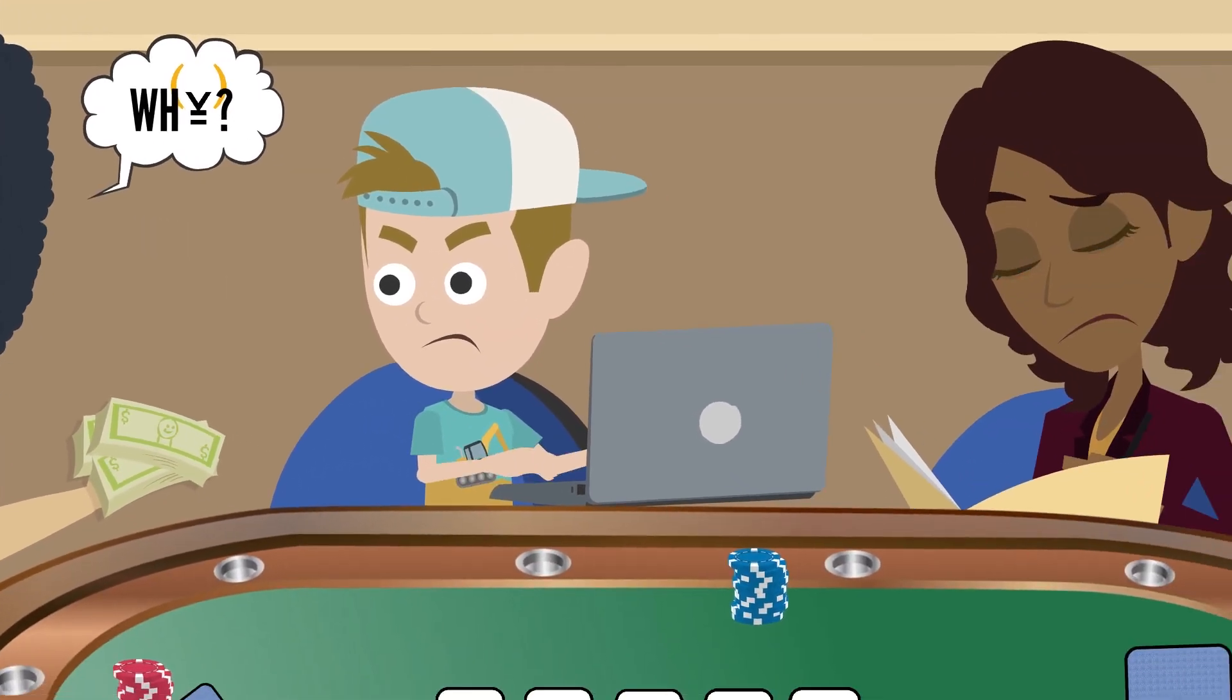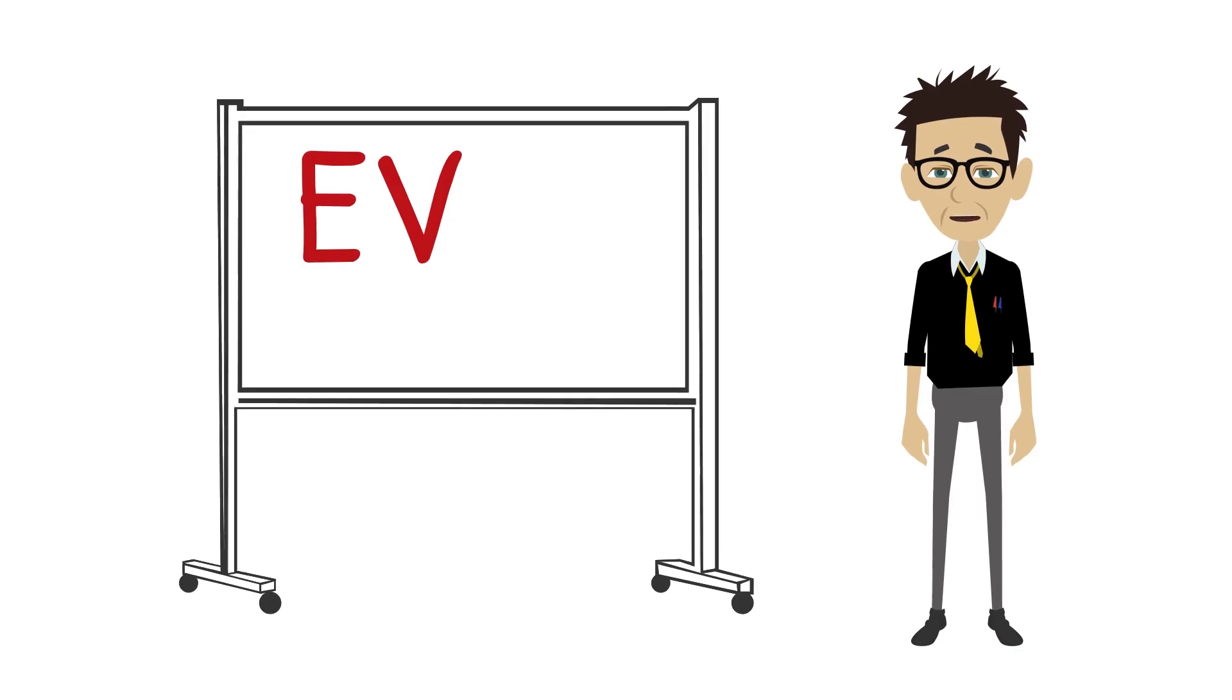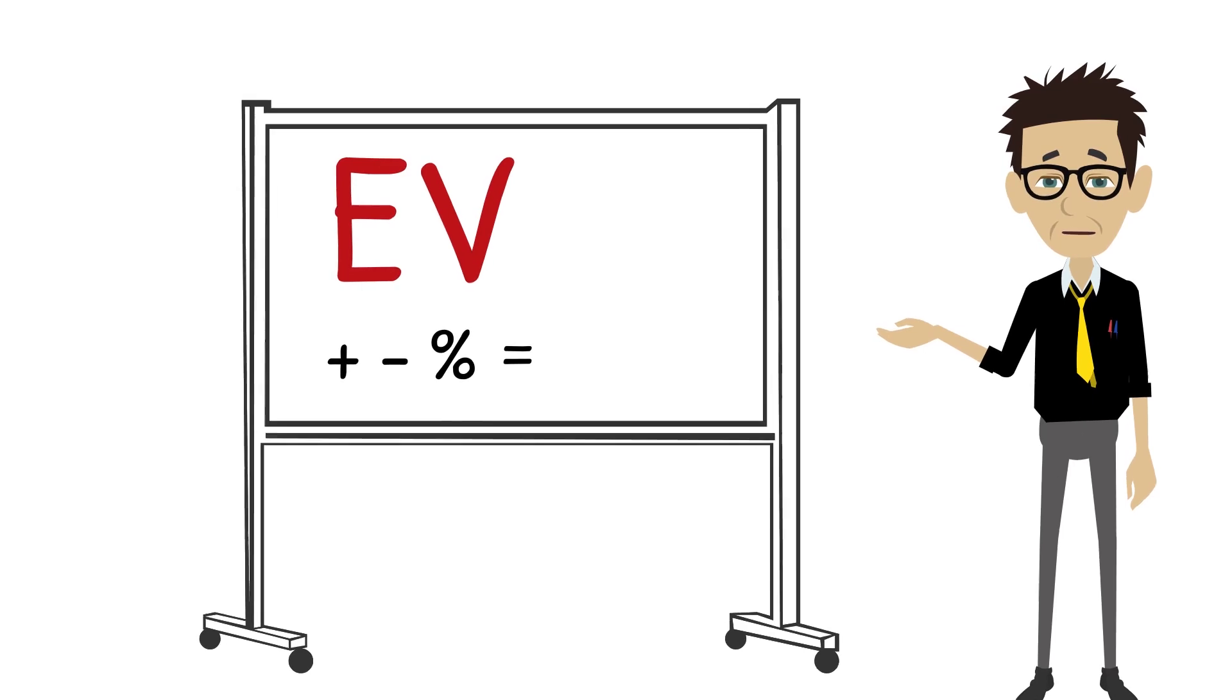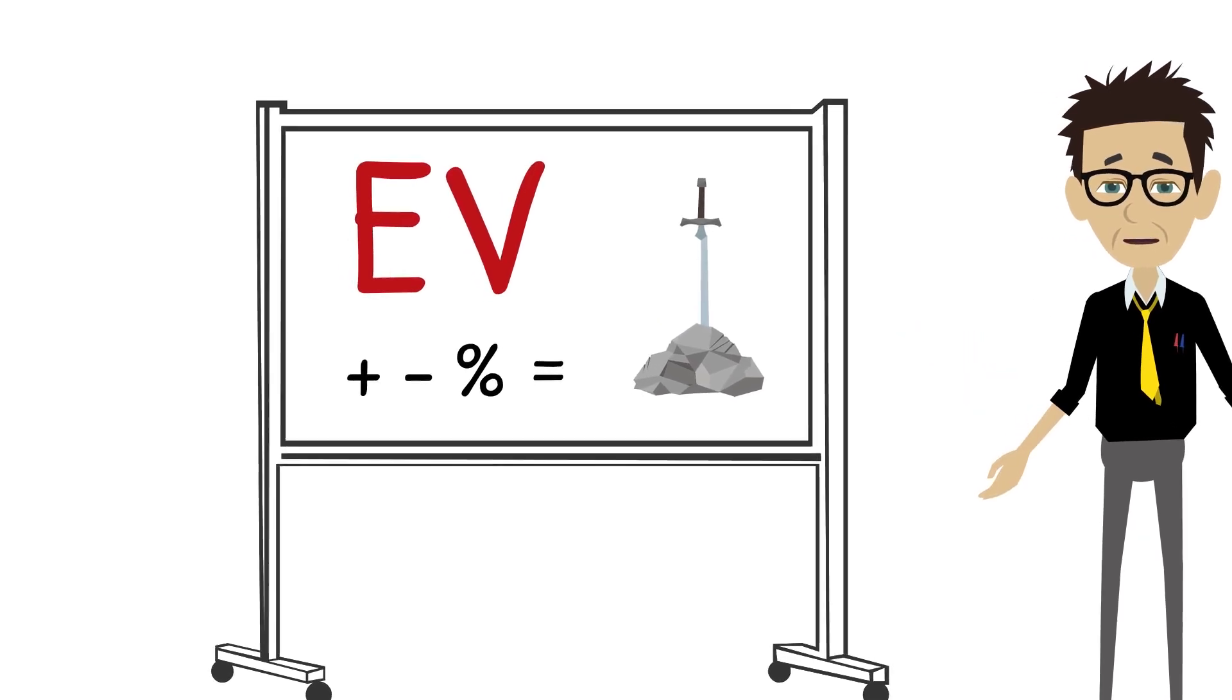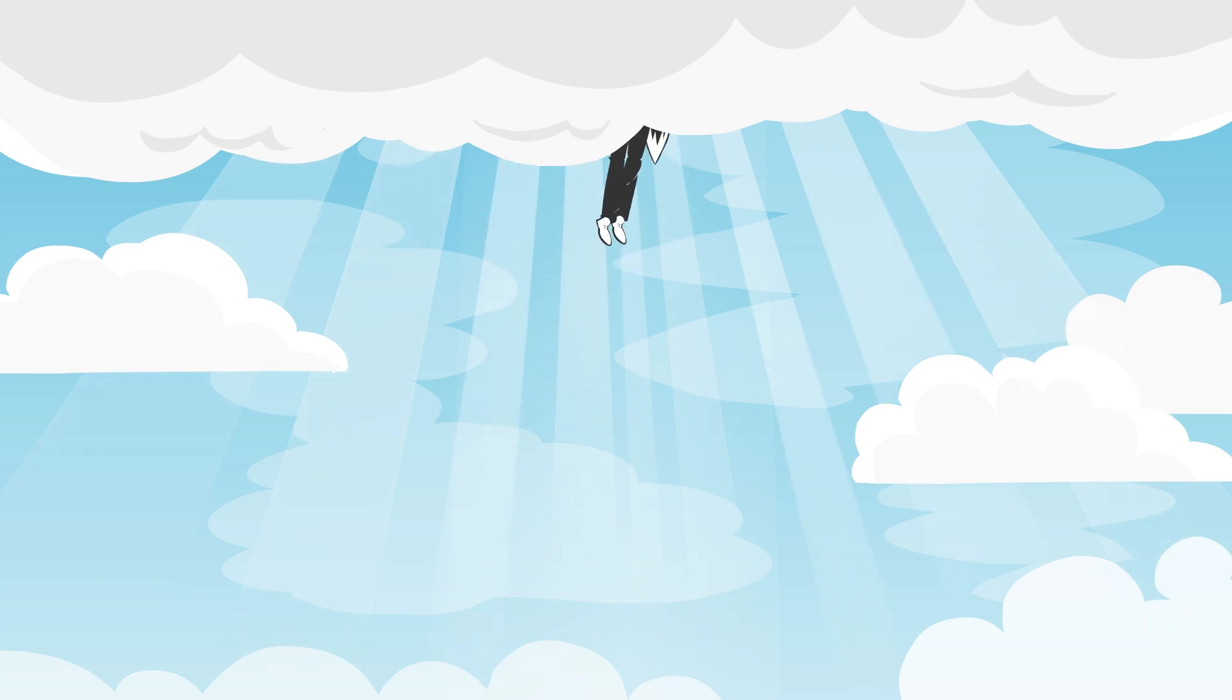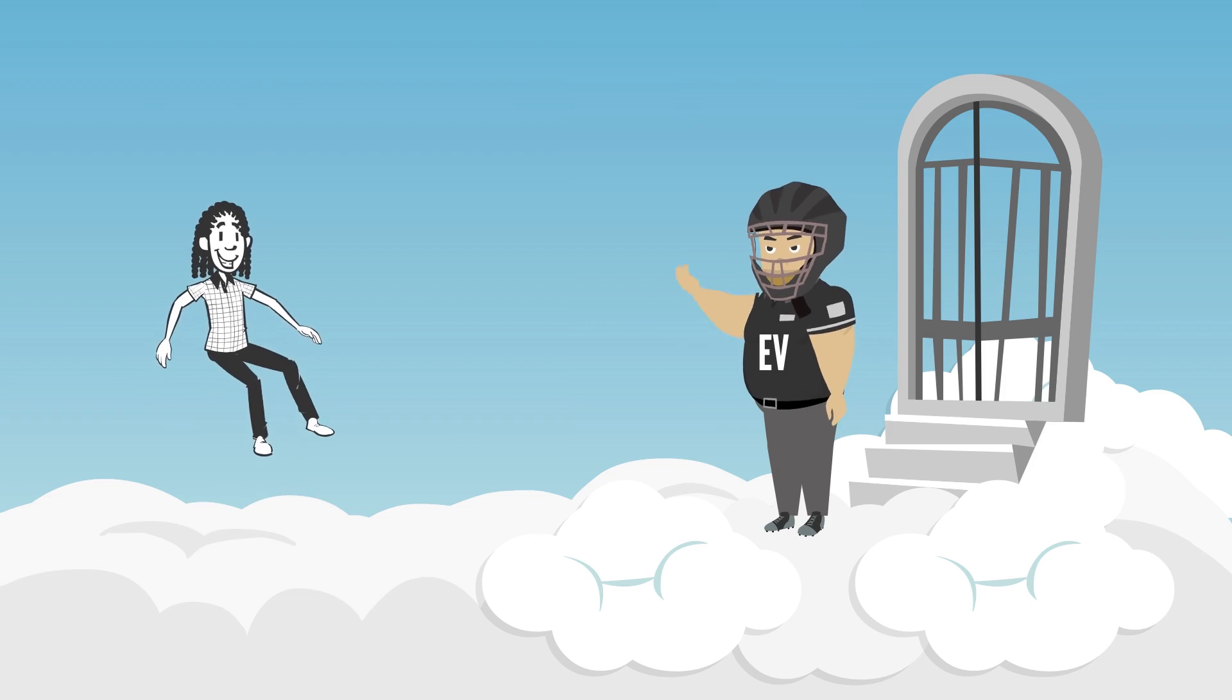It's a learning process that never ends, no matter how long you've been playing. The more you understand EV and how it works, the easier it will be to identify strategic edges over your opponents. Do that and you'll be well on your way to the ultimate goal in poker: maximizing the expected value of your decisions.